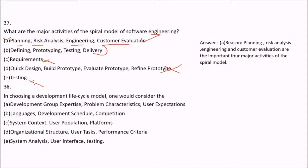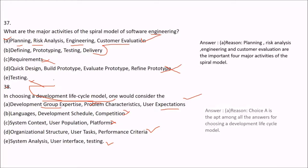Question 38: In choosing a development lifecycle model, one would consider what? Option A is development group expertise, problem characteristics, and user expectation — this is good. Option B includes languages, development, schedule, and competition — no. Option C is system context, user population, and platforms — not really. Option D is organization structure, user task, and performance criteria — to a certain extent. The main answer for choosing a development lifecycle model is A.